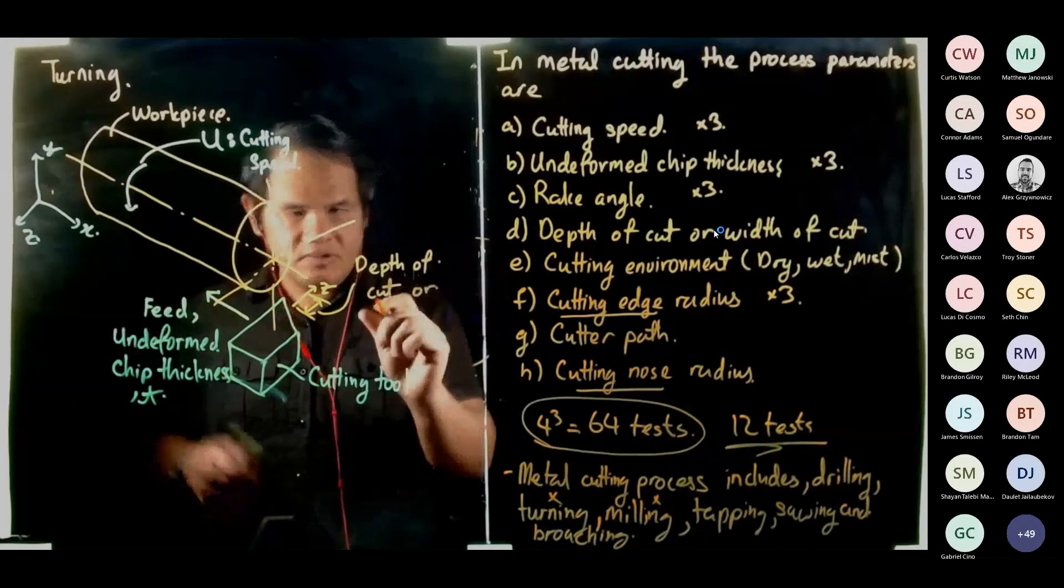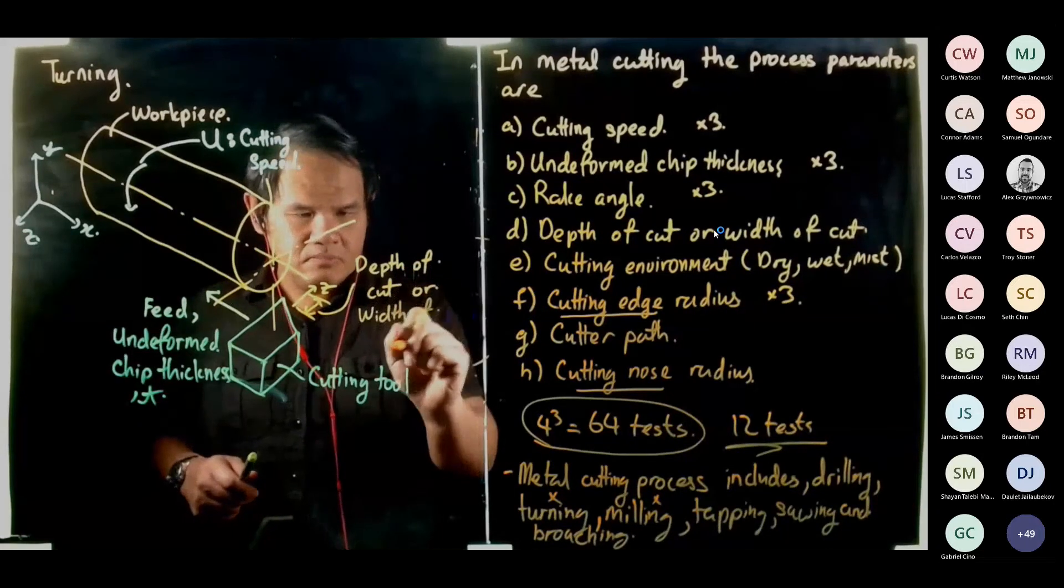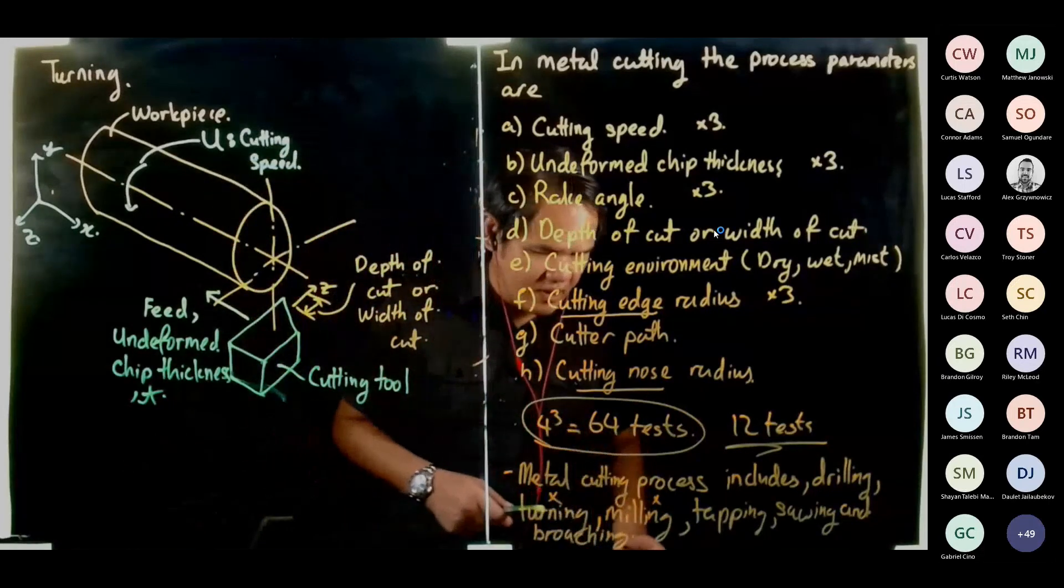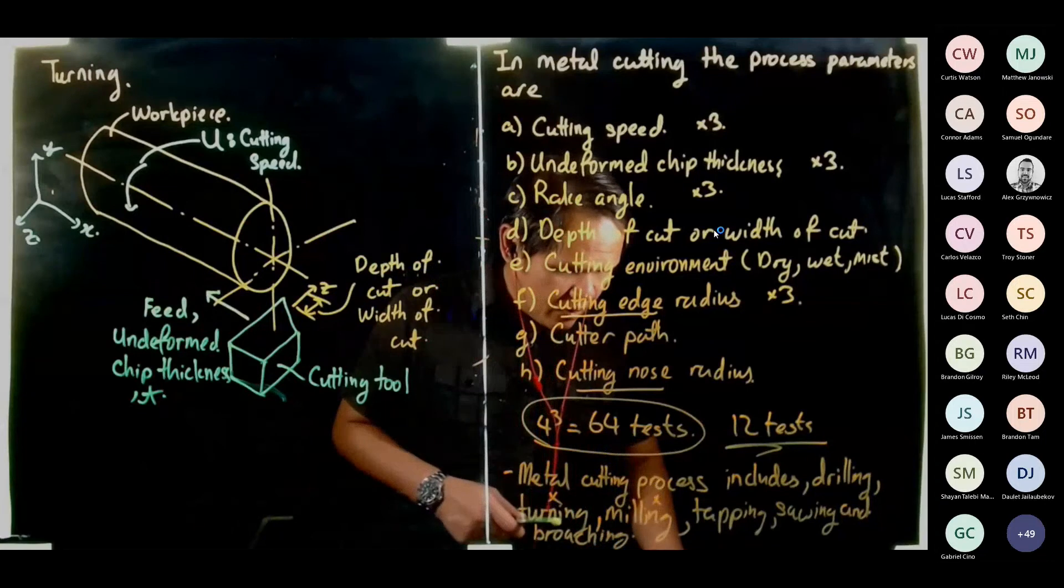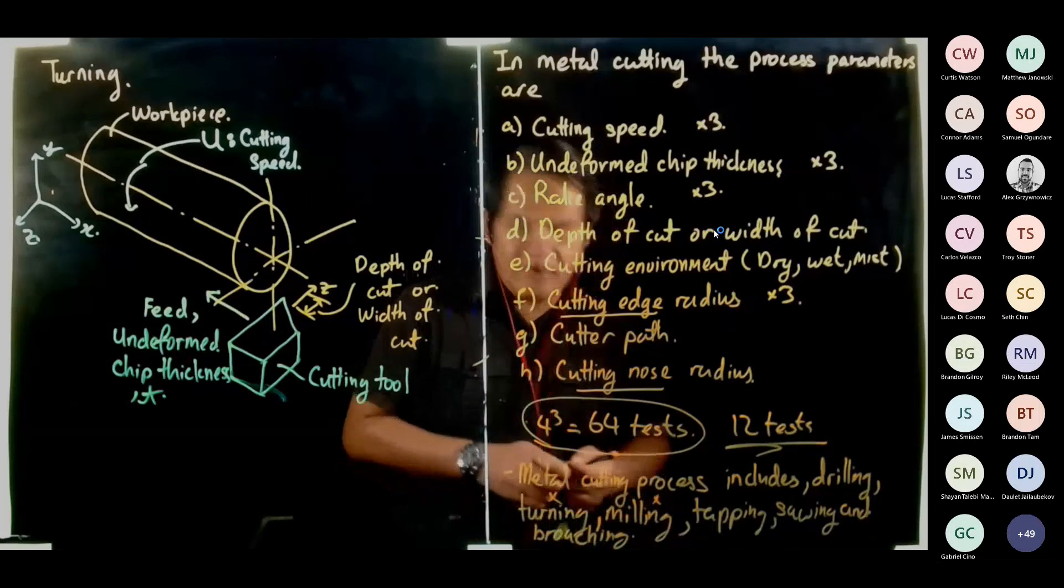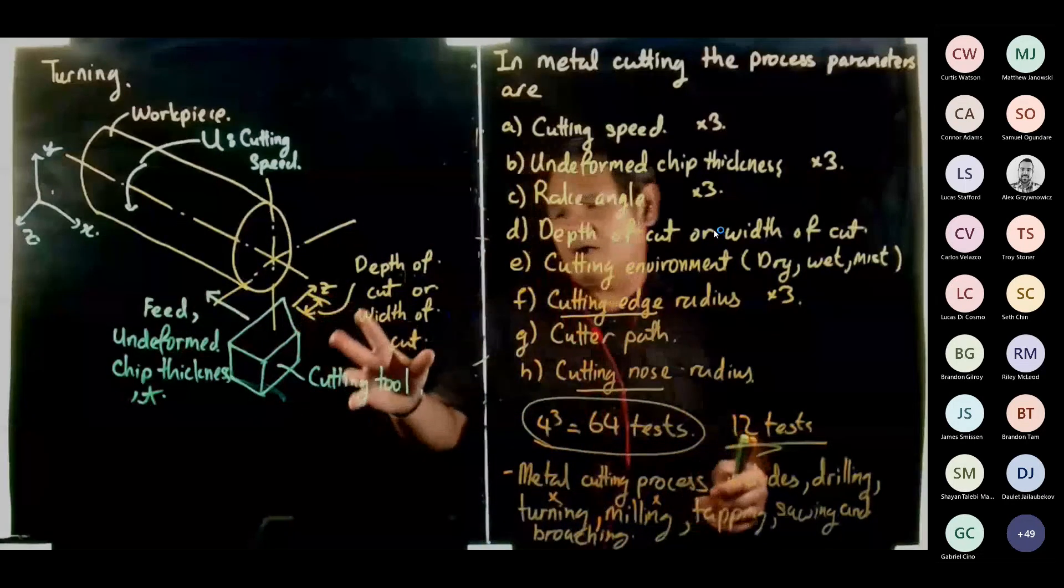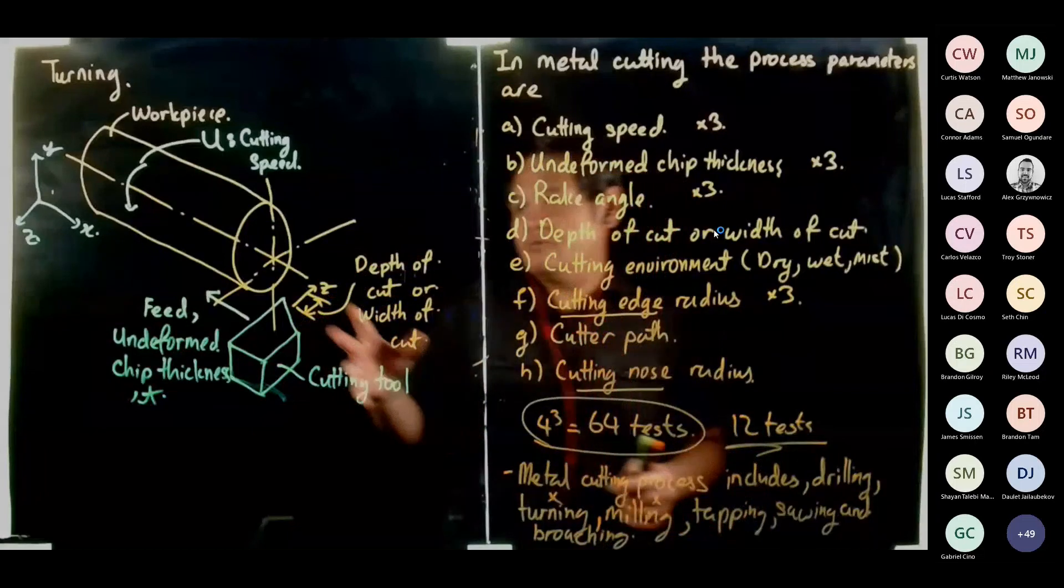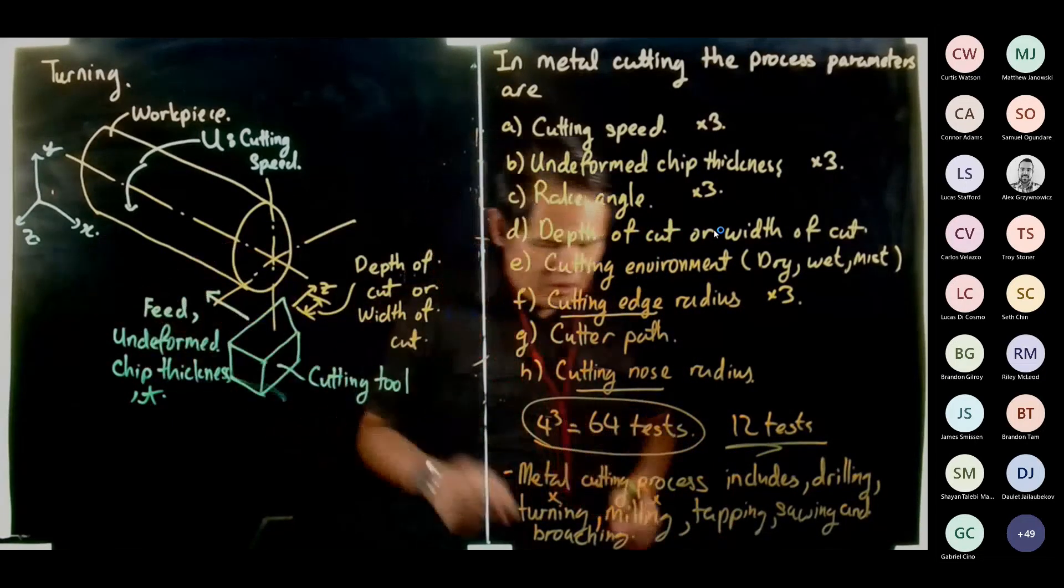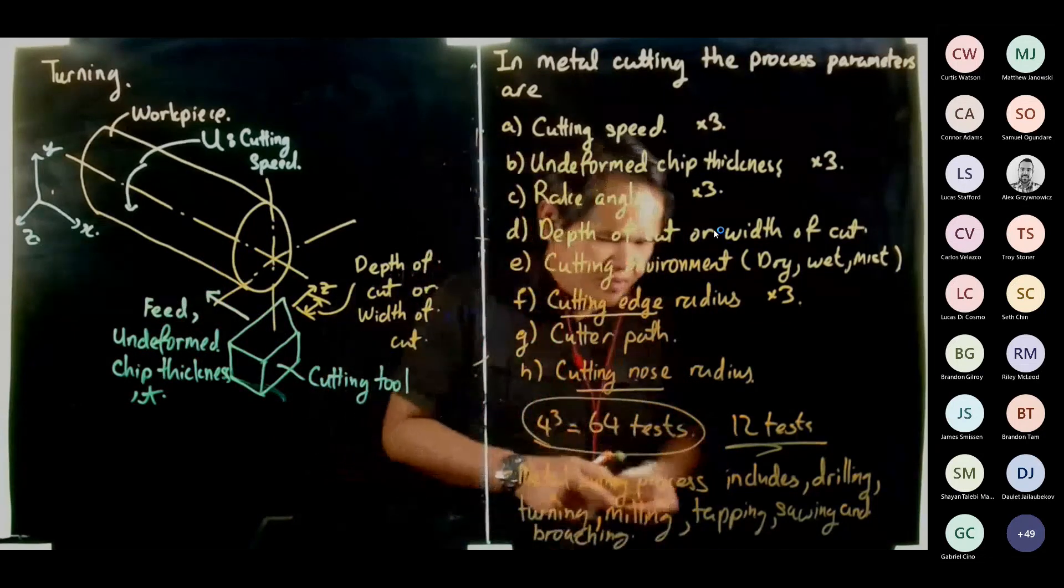The distance moved from here to here is known as our depth of cut or sometimes we call it our width of cut. So these are the three key features you can control: your cutting speed, feed, and your undeformed chip thickness.